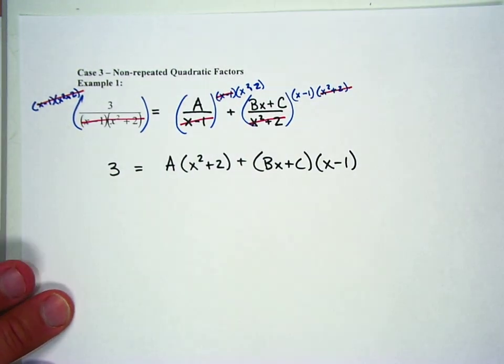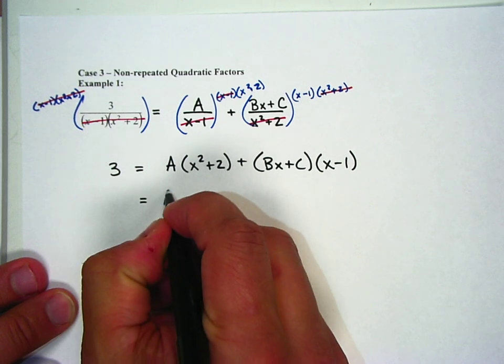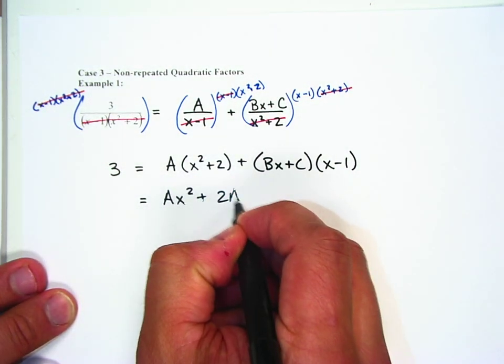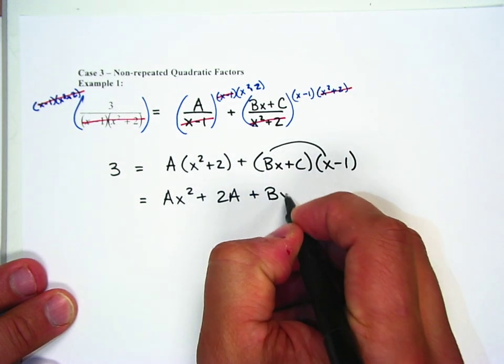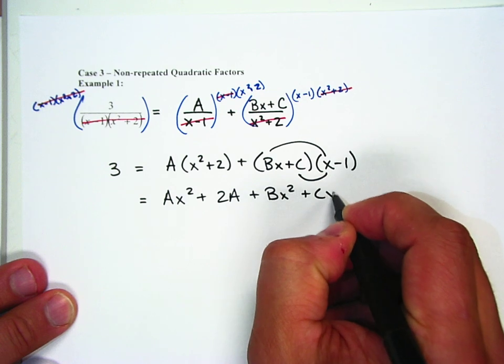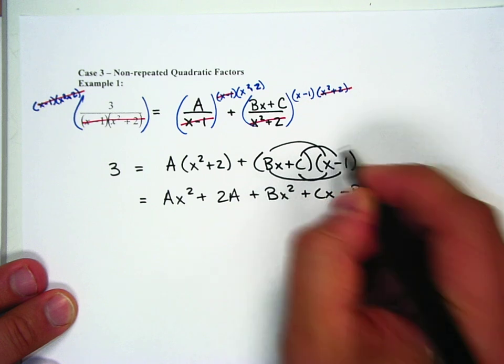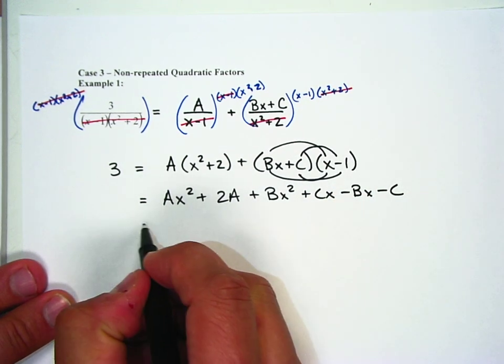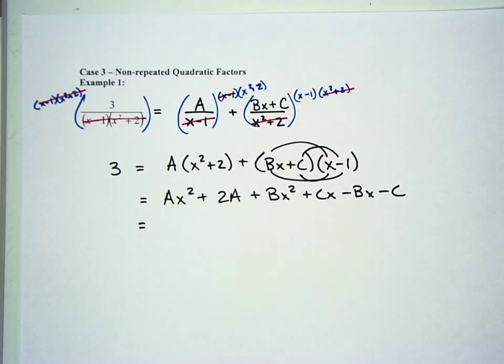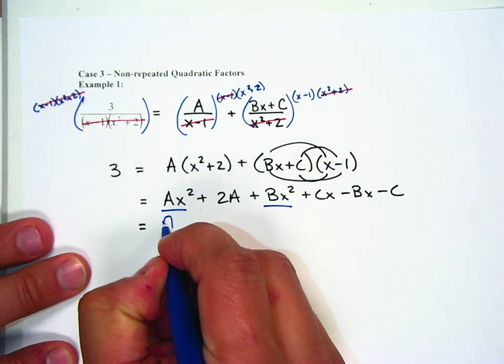So there's our new setup. Now it's just a matter of going through and distributing or FOILing or whatever it is we've got to do. So we have Ax squared plus 2A plus Bx times x is Bx squared. C times x is Cx. Bx times negative 1 is negative Bx.